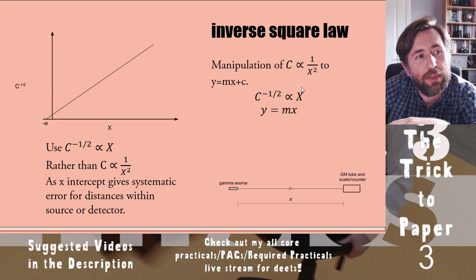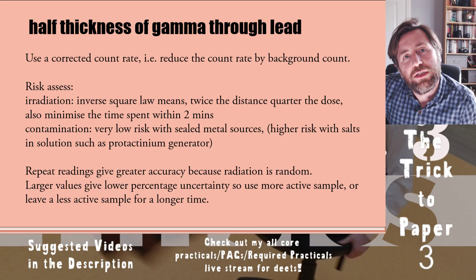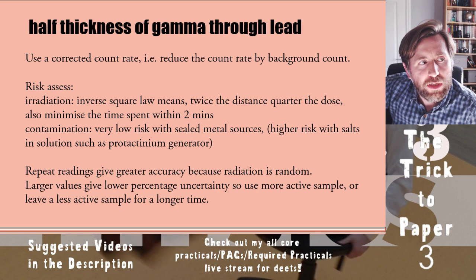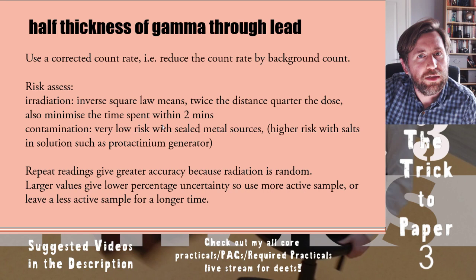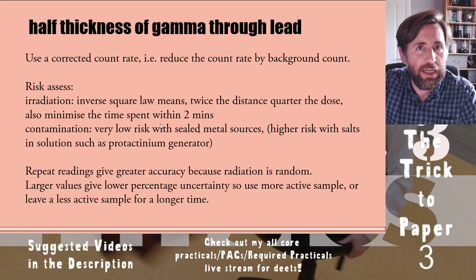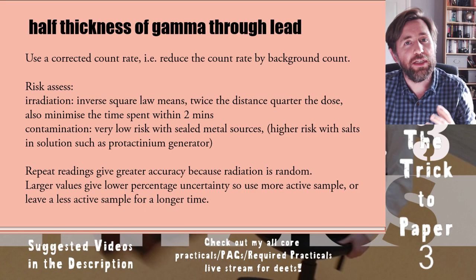Evaluative points for the gamma practical: using a corrected count rate is really important — you subtract the background radiation. Also, the orientation of the Geiger-Müller tube matters: positioning it perpendicular to the gamma source gives the largest detection area, maximizing count rate and minimizing percentage uncertainty. A larger measured value on a small scale gives the least percentage uncertainty.